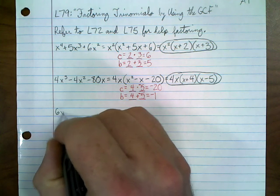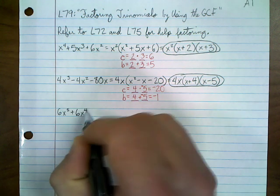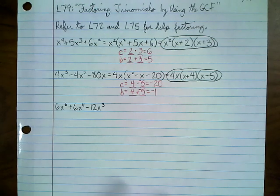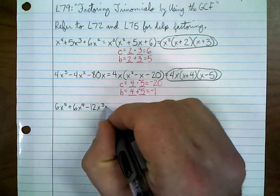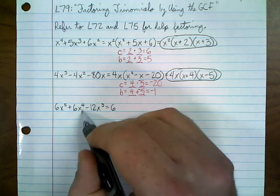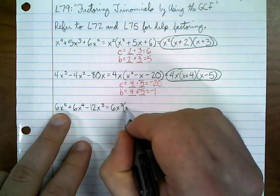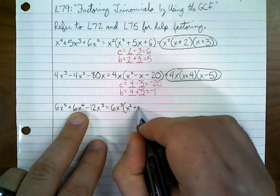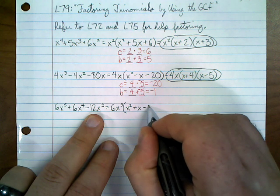For our next example, we're looking at 6x to the 5th power plus 6x to the 4th power minus 12x to the 3rd power. The coefficients 6, 6, and 12 allow us to pull out a 6. The variables x to the 5th, x to the 4th, and x to the 3rd allow us to pull out x cubed. So the GCF is 6x cubed, leaving behind x squared plus x minus 2.